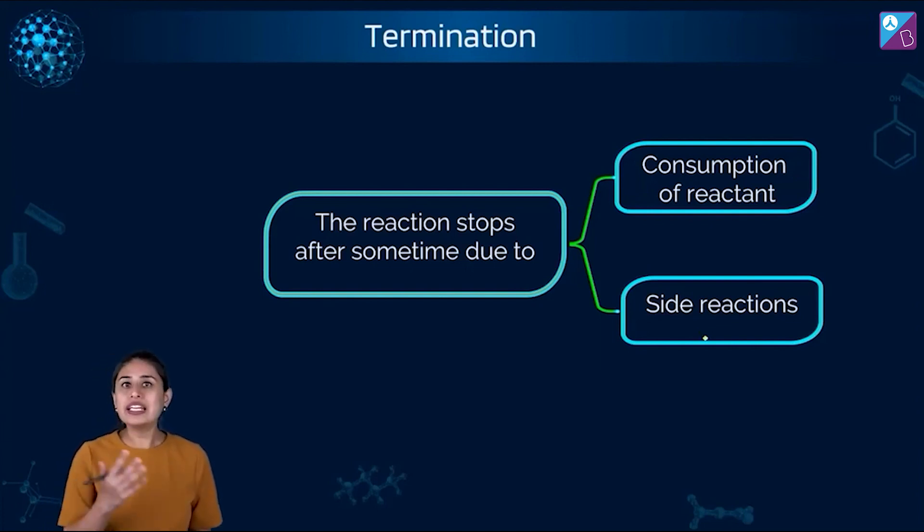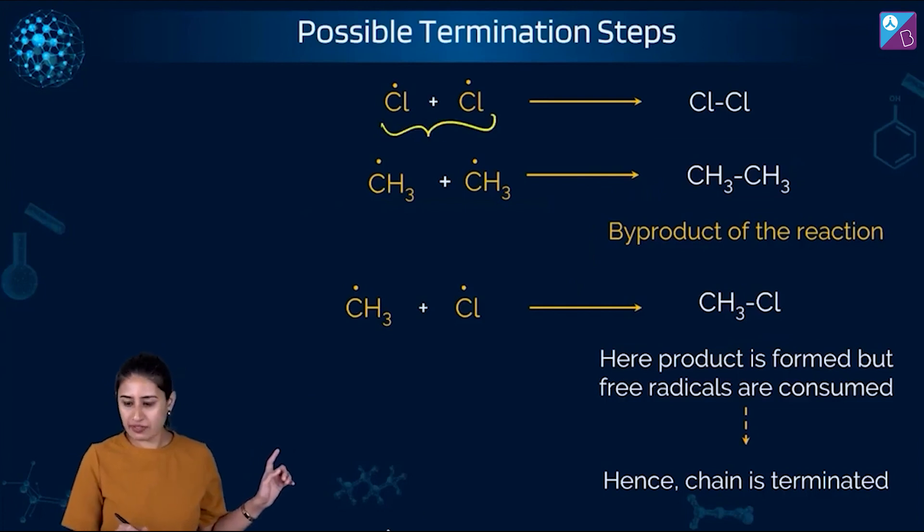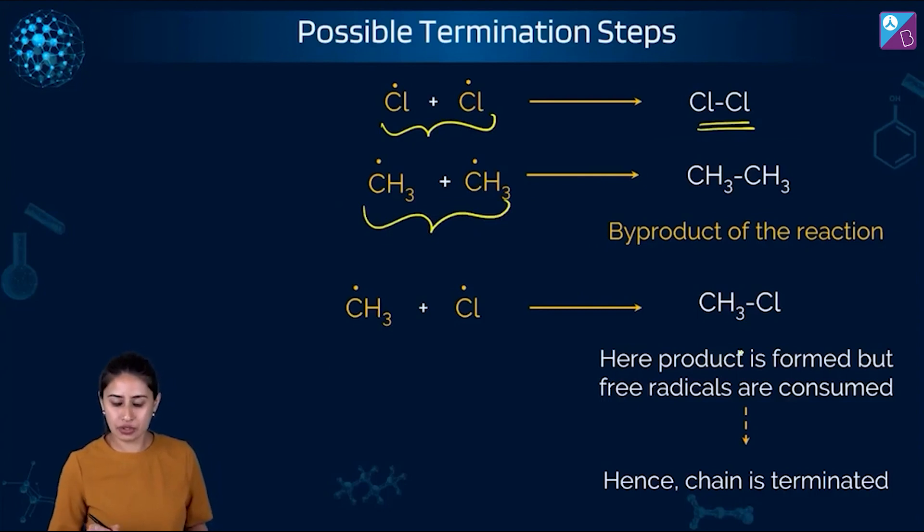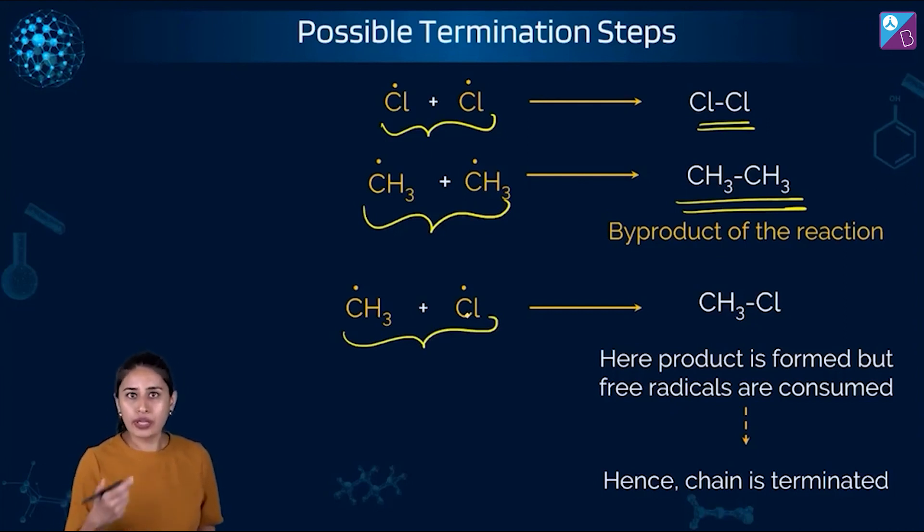I just showed you different side reactions. Let's take a look at them once again. They can be chlorine free radical combining with chlorine free radical to give you Cl2. CH3 free radical combining with CH3 free radical to give you ethane. And these are called byproducts. And CH3Cl, because we are talking about halogenation of alkane. Our product of consideration is the halo alkane that we are getting, which is CH3Cl. And rest all are our byproducts. So here product is formed, but free radicals are consumed. Hence, chain is terminated.